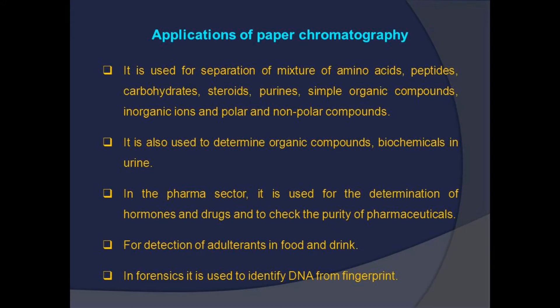The applications of paper chromatography include separation of mixtures of amino acids, peptides, carbohydrates, steroids, purines, simple organic compounds, inorganic ions, and polar and non-polar compounds. It is also used to determine organic compounds and biochemicals in urine. In the pharma sector, it is used for the determination of hormones and drugs, and to check the purity of pharmaceuticals. It is used for detection of adulterants in food and drink, and in forensics to identify DNA from fingerprints.